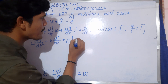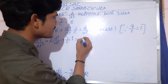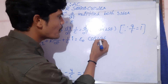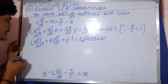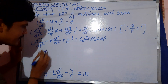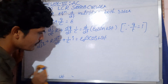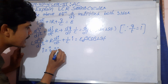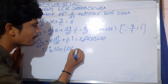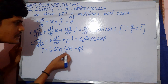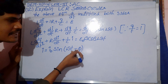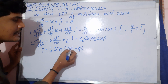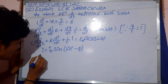The derivative of epsilon naught sin(ωt): epsilon naught is constant, sin becomes cos(ωt), omega derivative means omega. So I equals I₀ sin(ωt - φ), where I means current, I₀ means peak current, omega means angular frequency, t means time, and φ means phase.